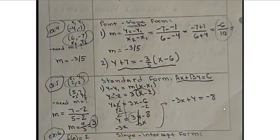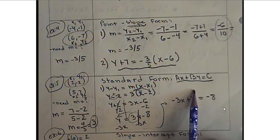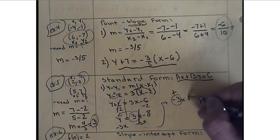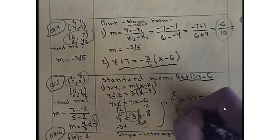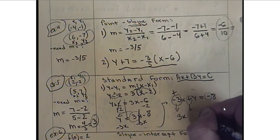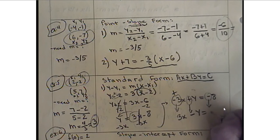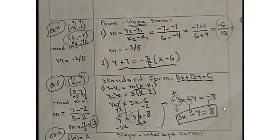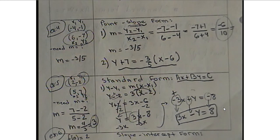As mentioned at the beginning, in standard form the leading term must always be positive. So we change the sign of each term: negative 3x becomes positive 3x, y becomes negative y, and negative 8 becomes positive 8. The final answer is 3x minus y equals 8. That completes the example of converting two given points through all the forms to reach standard form.